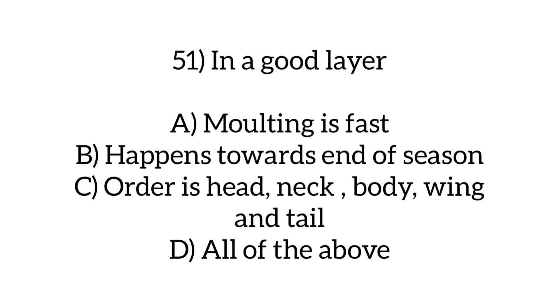In a good layer, molting is fast and happens towards the end of the season. The order of molting is: head, neck, body, wing, and tail. Option D: all of the above.